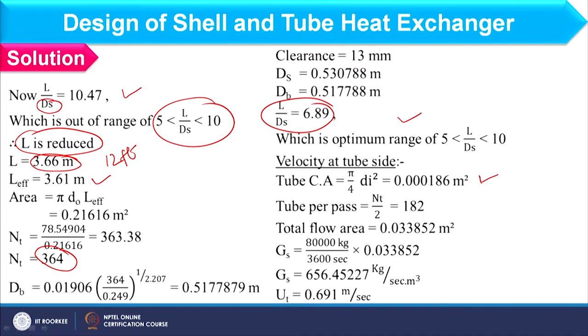The dirt factor for toluene will be the same as benzene from the previous example in Lecture 15. Here, water is on the tube side and toluene is on the shell side. Let us continue with the velocity calculation on the tube side. The cross-sectional area per tube and total flow area are calculated, and since we are considering one tube pass, the velocity comes as 0.691 m/s.